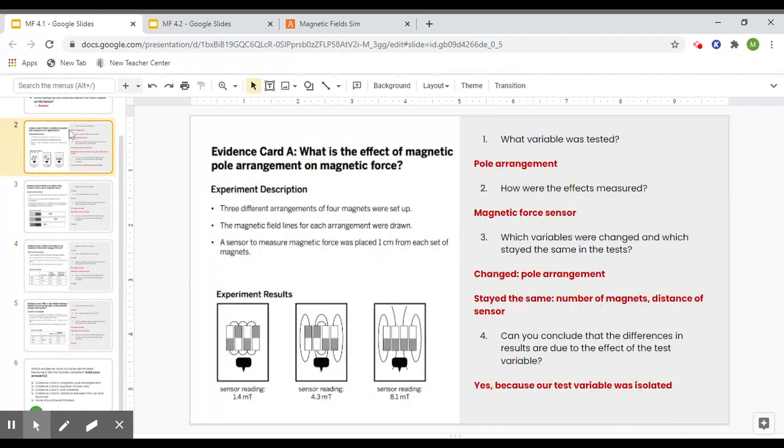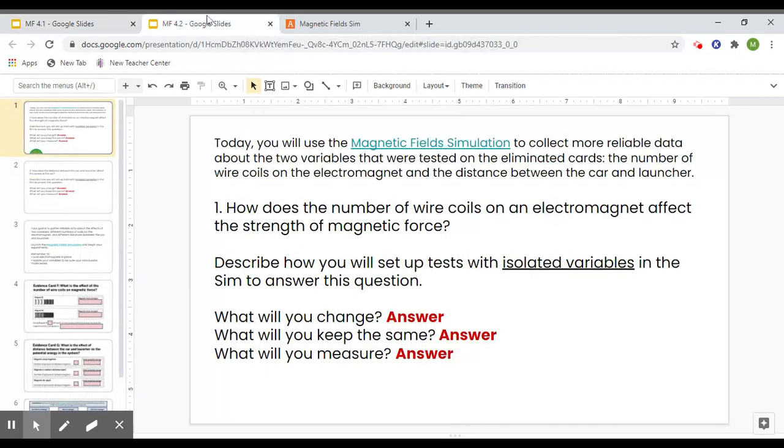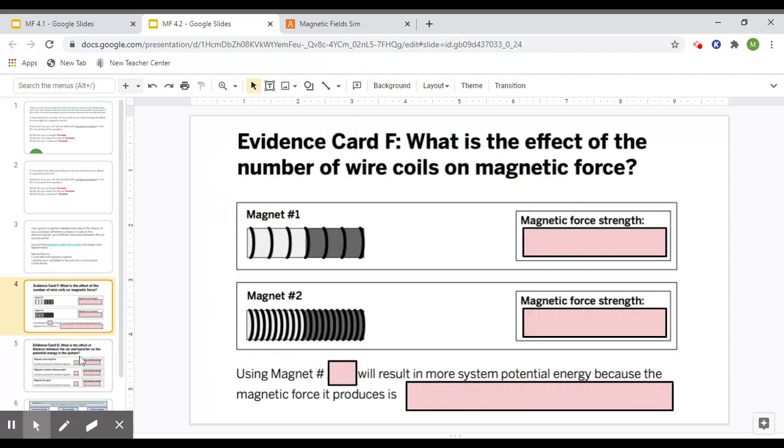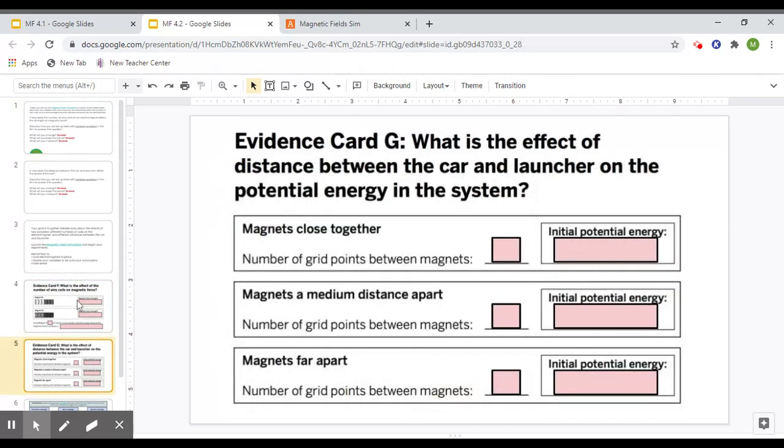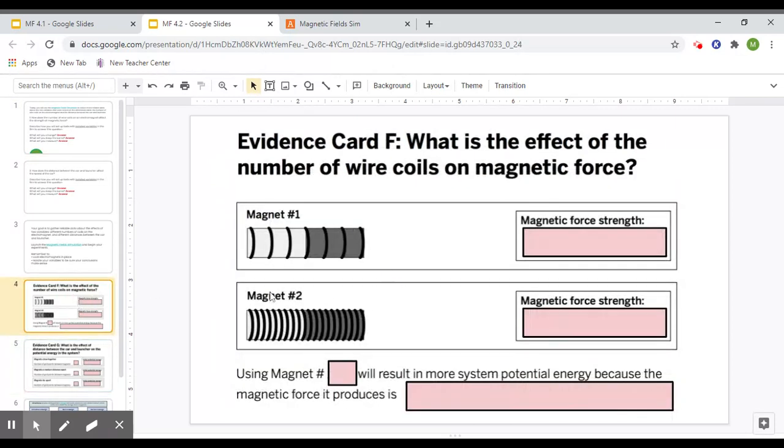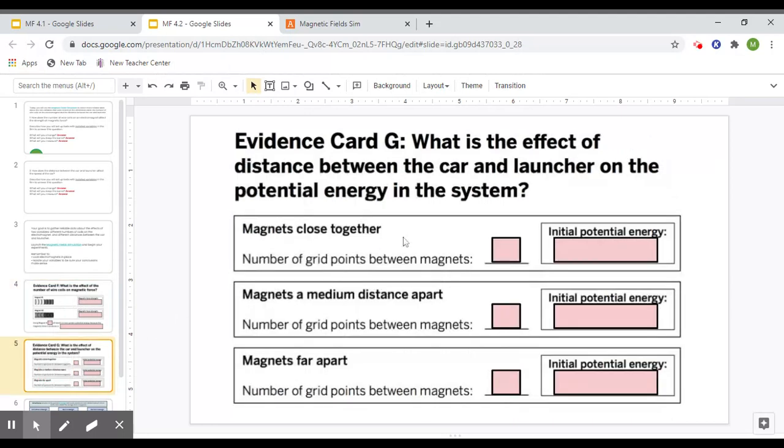Card C and A are valid because they only change the test variable per test. So because we eliminated those cards, now in this lesson today you will have to run tests to get valid information from those cards. So for now we have card F and G, and that will test the number of wire coils and the distance between magnets.